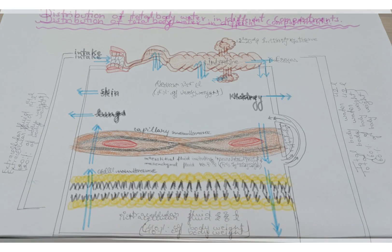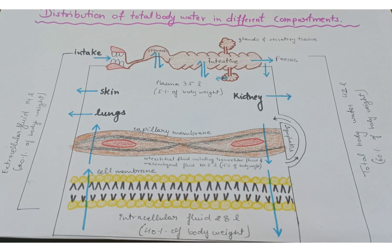The average adult male is composed of water (60 percent), minerals (7 percent), protein and related substances (18 percent), and fat (15 percent). Water is denoted by the term total body water. For a person of 70 kg, total body water comprises 60 percent of body weight in the average adult male.